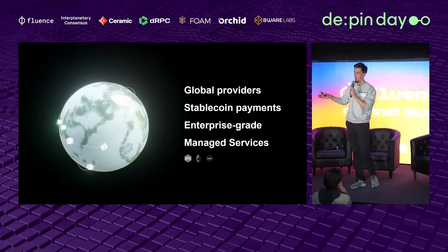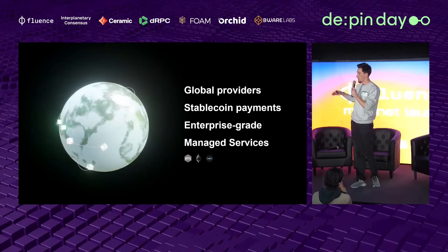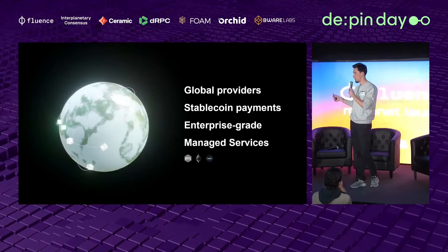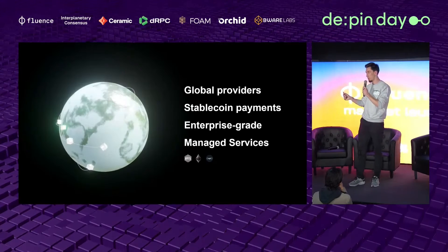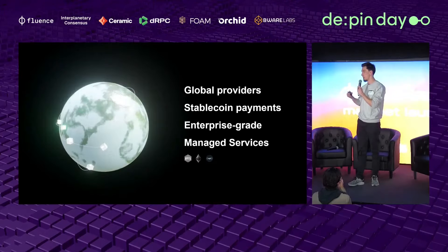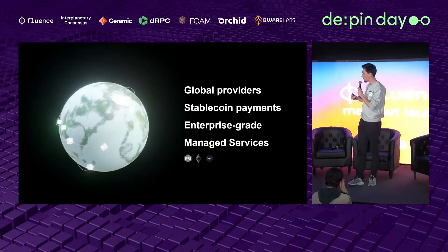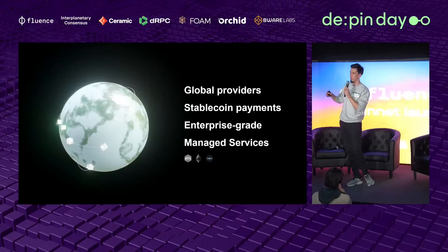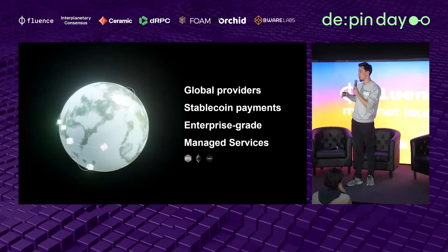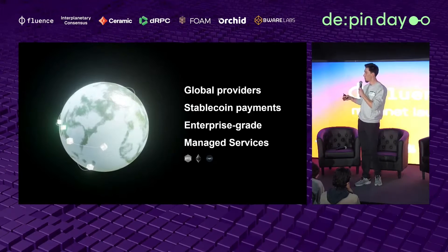By default, payments on the marketplace happen in stablecoins. We use USDC as the initial payment token, and potentially we will open payment tokens to others that providers can accept. Stablecoins are the default because providers account their resources in stablecoins — they pay in fiat for hardware and electricity, so it's important for them to have more stable, predictable income. Every provider is different, like a company that has computational power somewhere, and they may also have additional skills or services they can provide beyond pure computation.